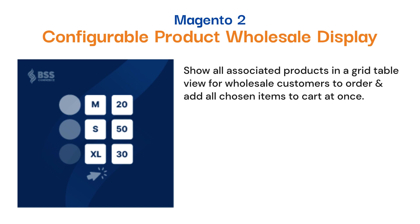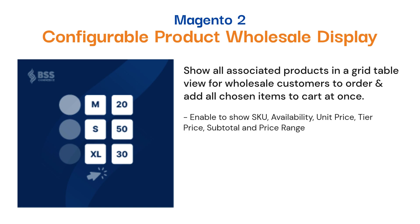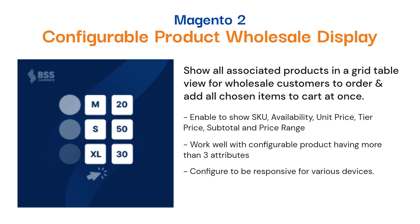We suggest Magento 2 Configurable Product Wholesale Display Extension. It helps show all associated products in a grid table view for wholesale customers to order and add all chosen items to cart at once. It enables display of SKU, availability, unit price, tier price, subtotal, and price range, is responsive for various devices, and enables sorting in the Wholesale Display table.